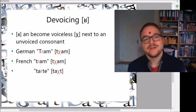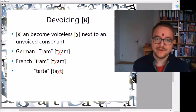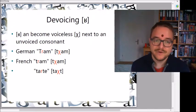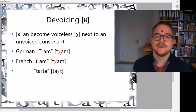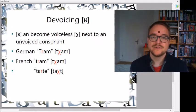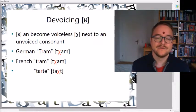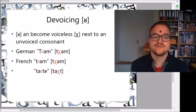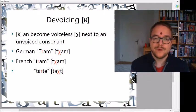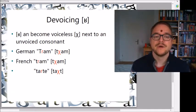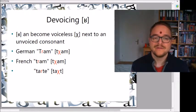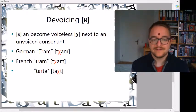As with the flap sounds, uvular rotics can also become de-voiced — so R becomes a KH sound. This usually happens next to an unvoiced consonant, after or in front of it. For example in German, the word for tram is 'Tram', so the R becomes a KH — 'Tram'. Or in French, same word 'tram'. Also after a vowel, like 'la nacht', the R becomes a KH.